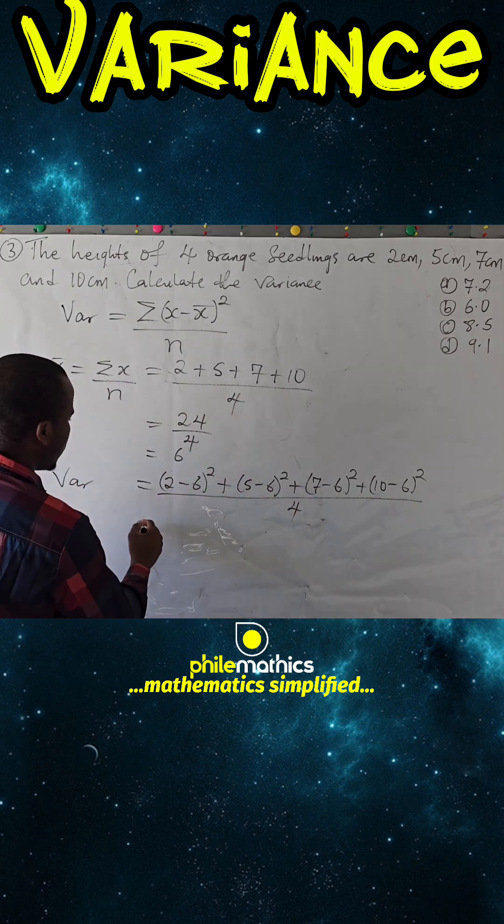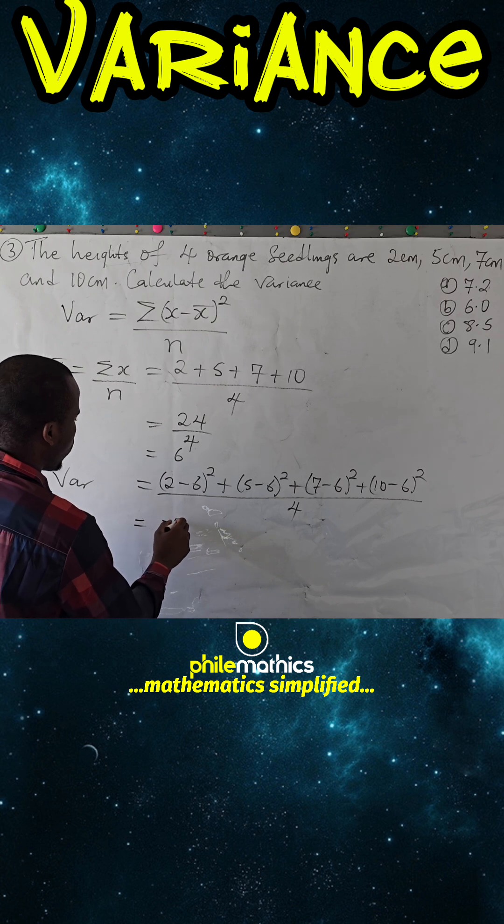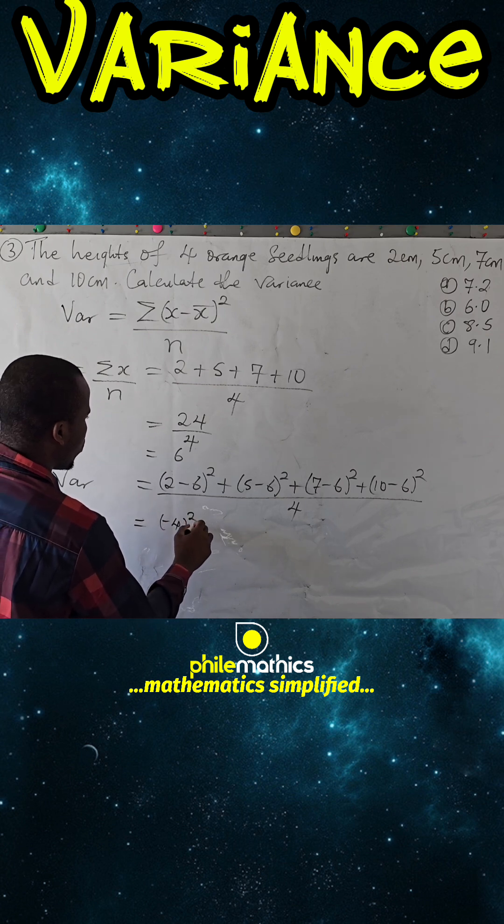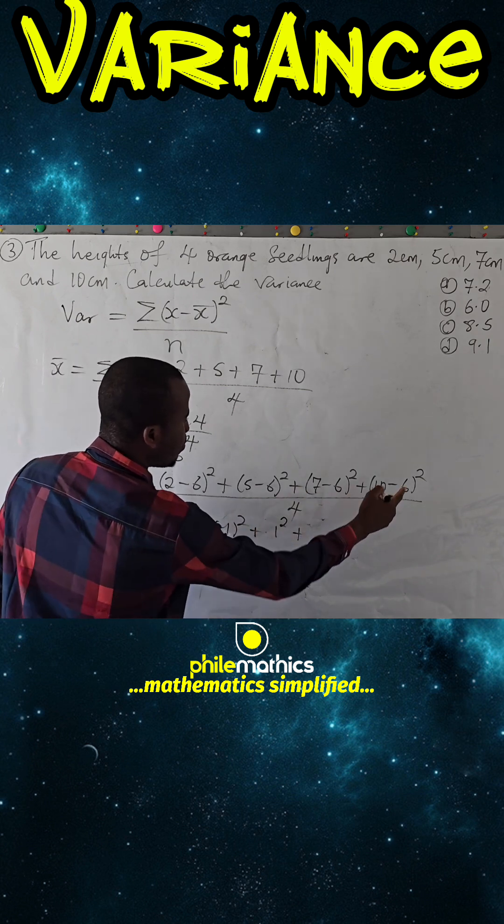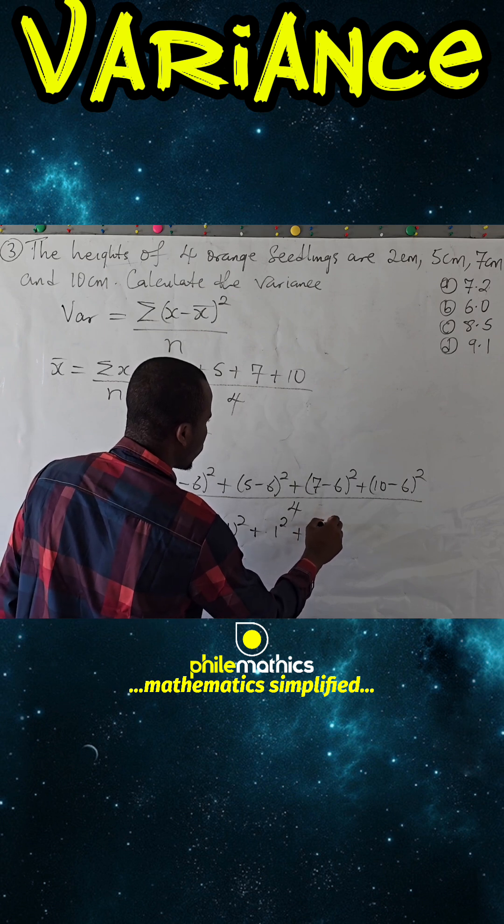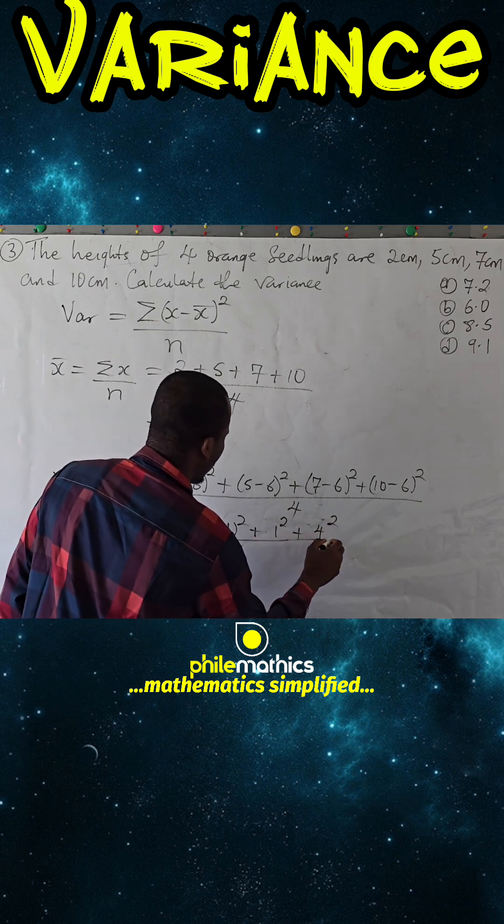2 minus 6 is negative 4 all squared, plus 5 minus 6 is negative 1 all squared, plus 7 minus 6 is 1 squared, plus 10 minus 6 is 4 squared, everything over 4.